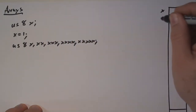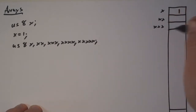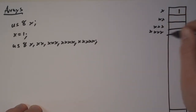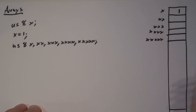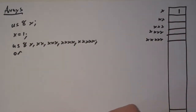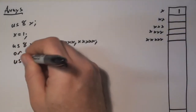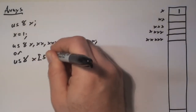If we want multiple memory locations, we can do something like this, where we create 5 variables, each with a different name — x0, x1, x2, x3, x4. Each one of these variables gets its own memory location.